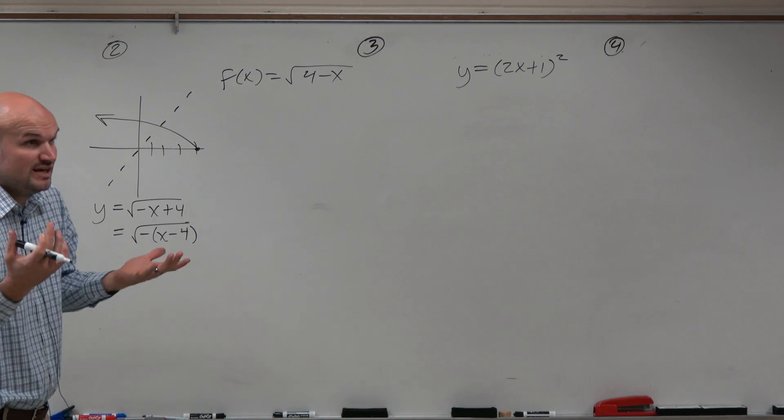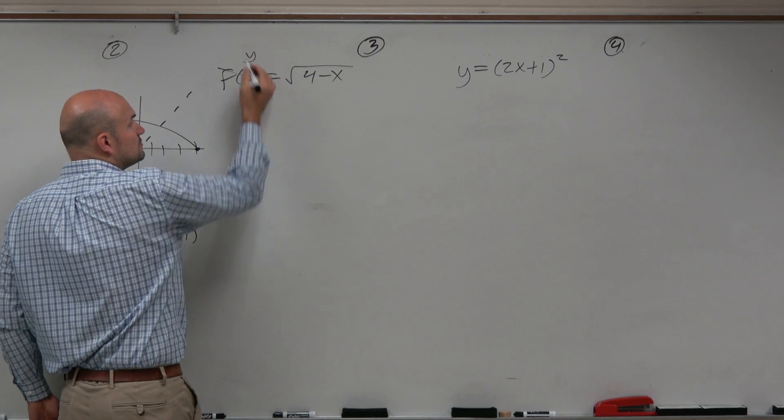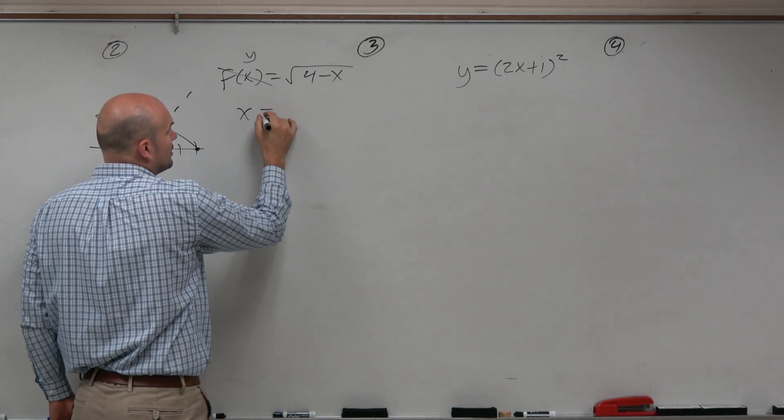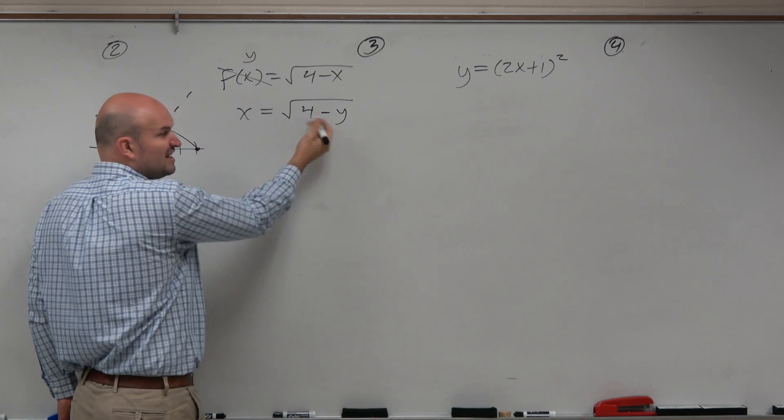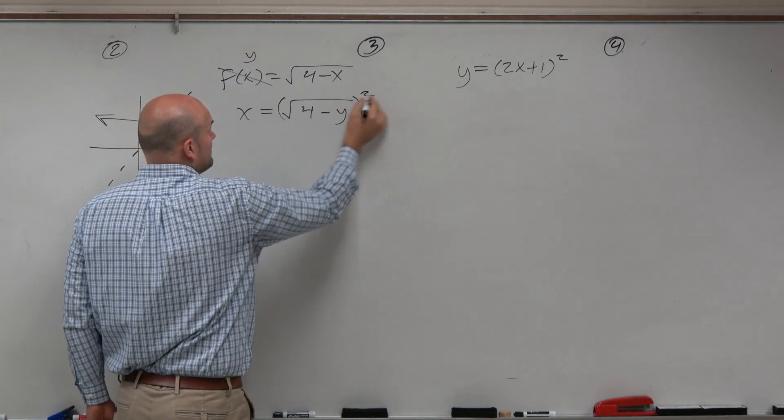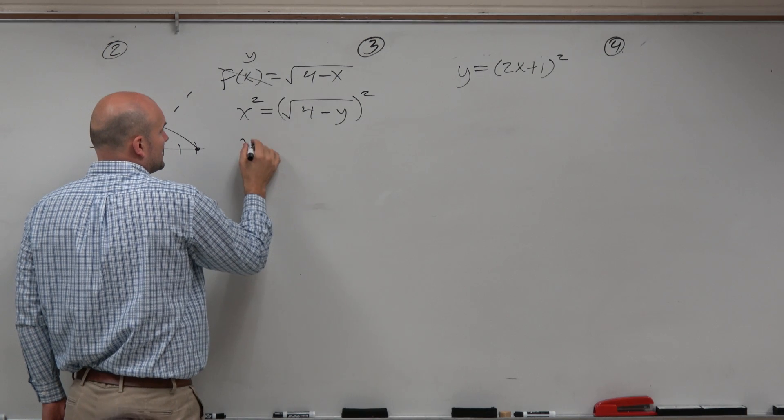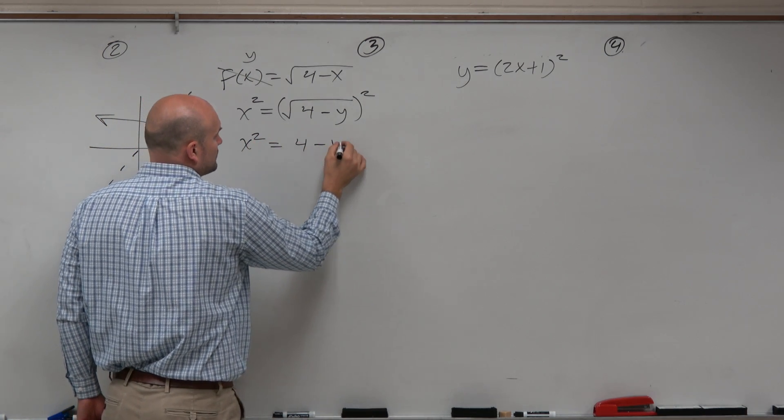All right. So now let's go ahead and do the inverse. Let's replace this with y, swap the x and y's, and solve. So this would be x = √(4 - y), right? This is like that warm up we did. You just undo that by squaring. So we get x² equals 4 minus y.